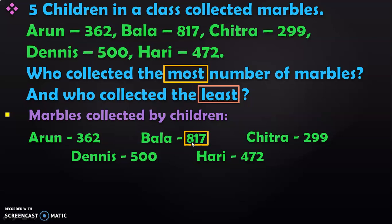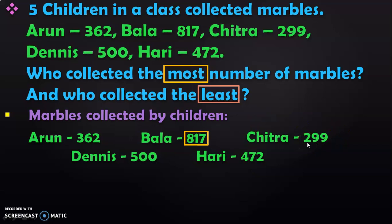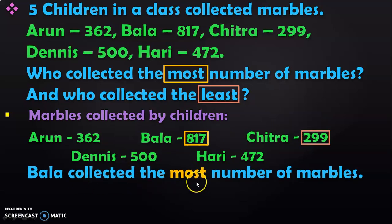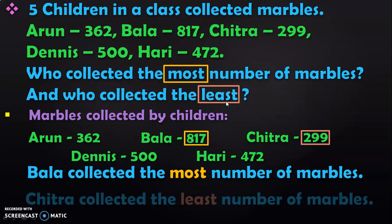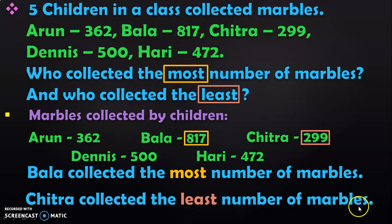Next, to find out who collected the least number of marbles, we have to find the smallest number. Once again, look at the hundreds place, where we have 3, 2, 5, and 4. Among which, 2 is the smallest number. With that, we can conclude that 299 is the smallest count. Now we will write down the answers in the form of statements: Bala collected the most number of marbles. Chitra collected the least number of marbles.